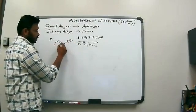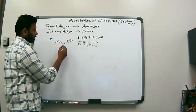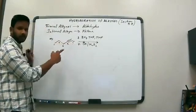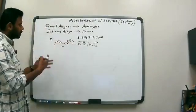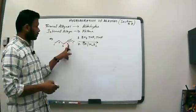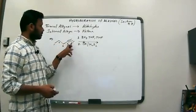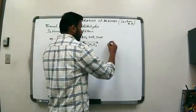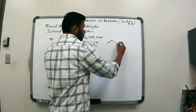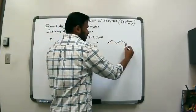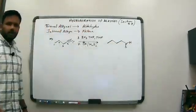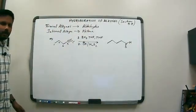Numbering the carbon atoms: one, two, three, four, and five. The fourth carbon becomes CH2 and the fifth carbon is the aldehyde. So counting: one, two, three, four, five — the fifth carbon is an aldehyde. That will be our product.